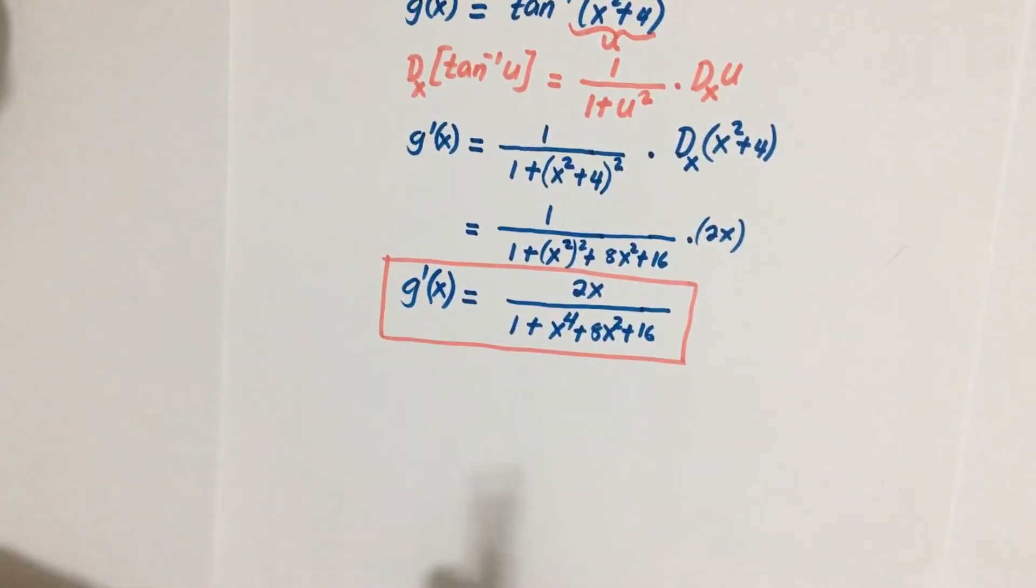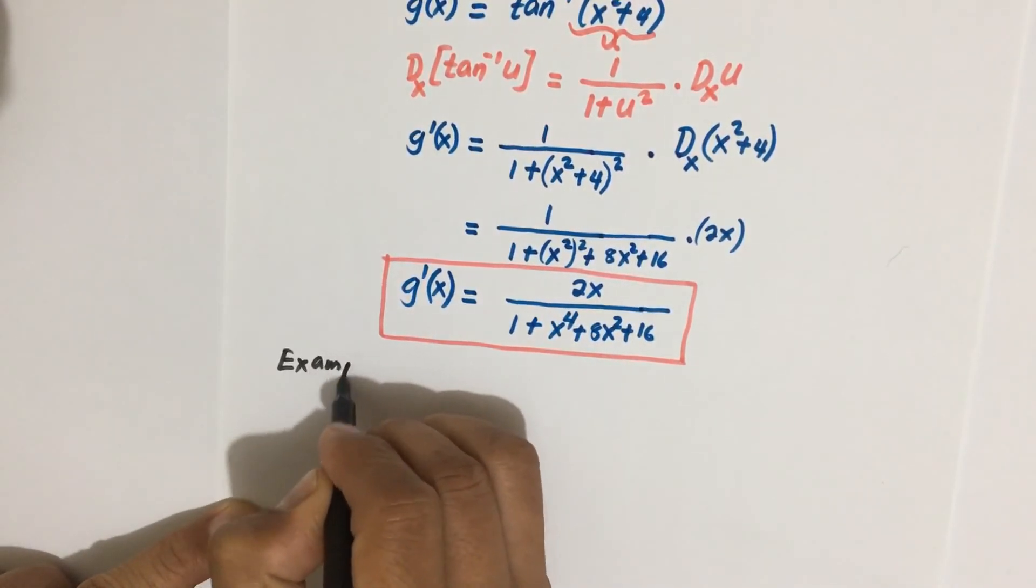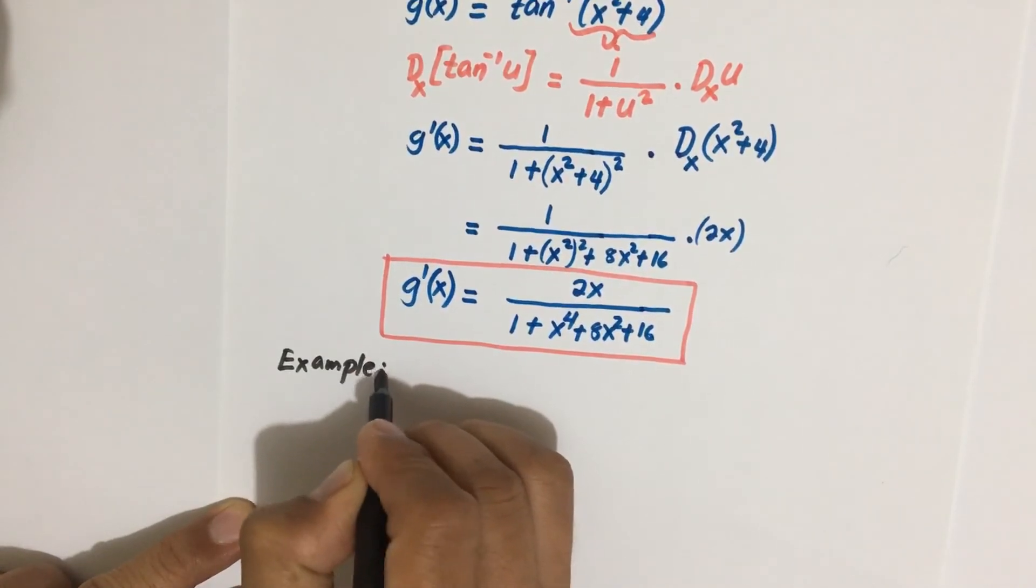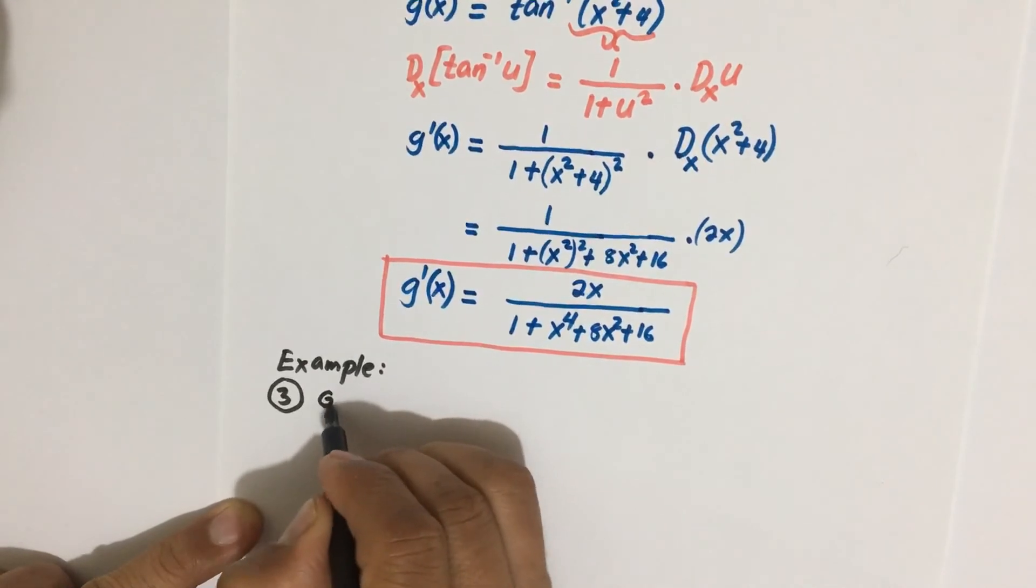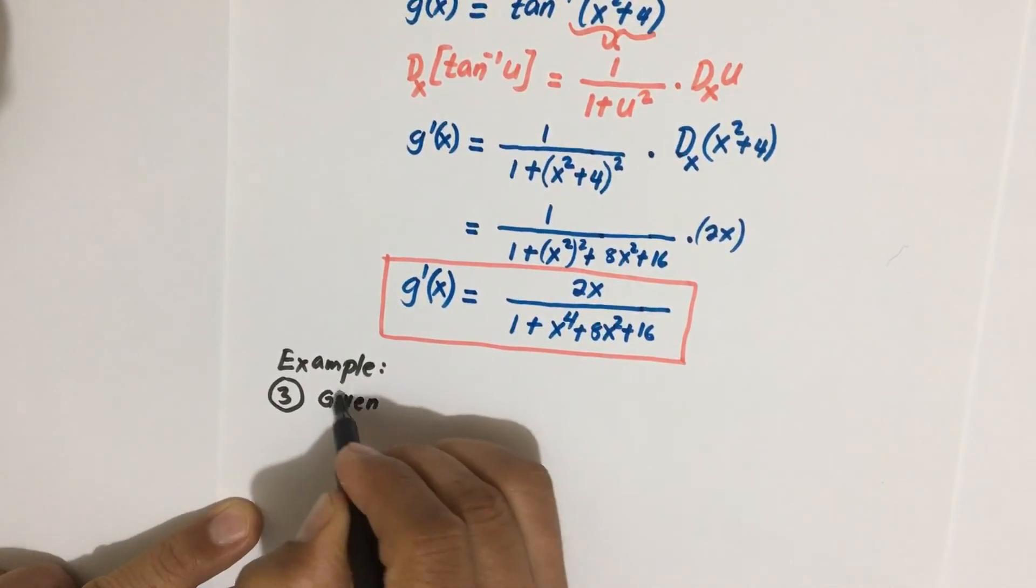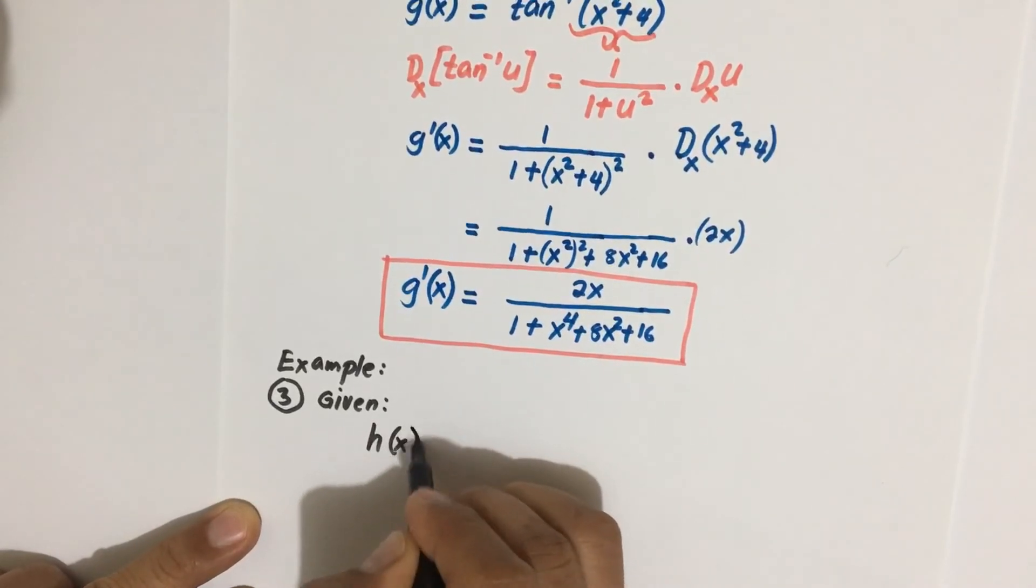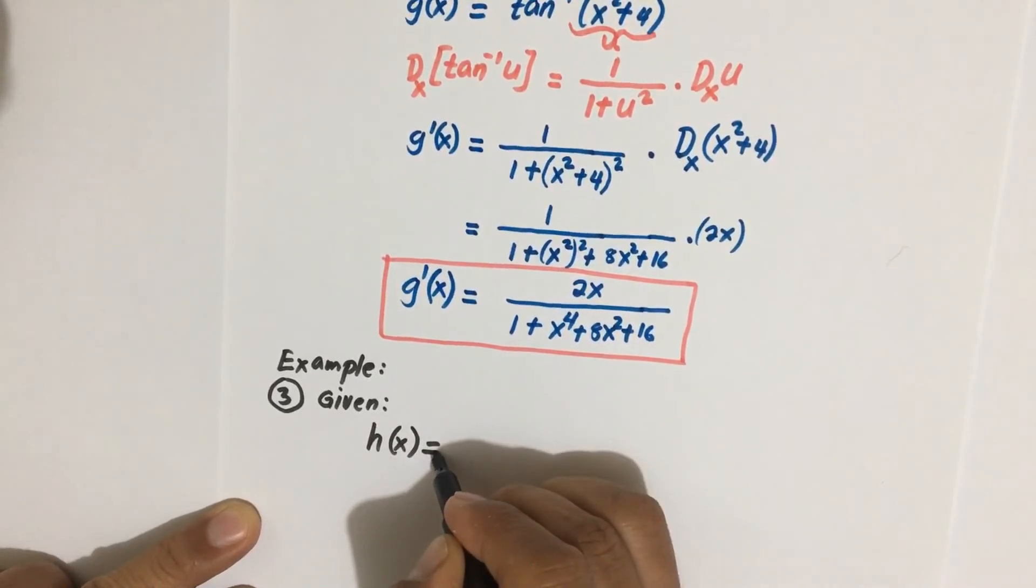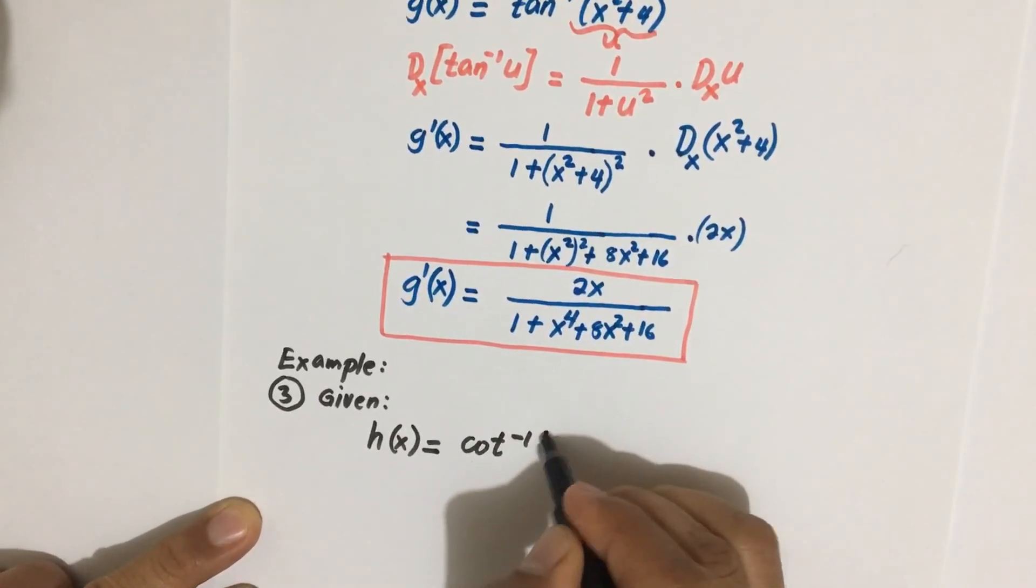Now for example number 3, if you want to take the challenge, try to solve this example and I will show you the solution in our next video. So this is the given, we have h of x equal to inverse cotangent of 5x